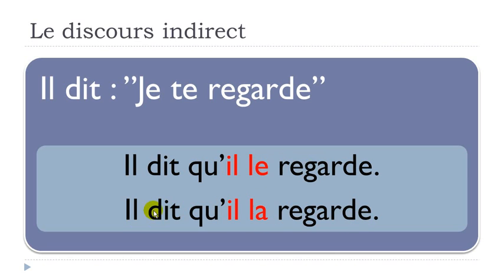The second option is 'Il dit qu'il la regarde,' which is used when referring to a woman or girl. We really need to know beforehand whether we're talking about a man or a woman, because without that context it's tricky to choose between 'le' and 'la.'